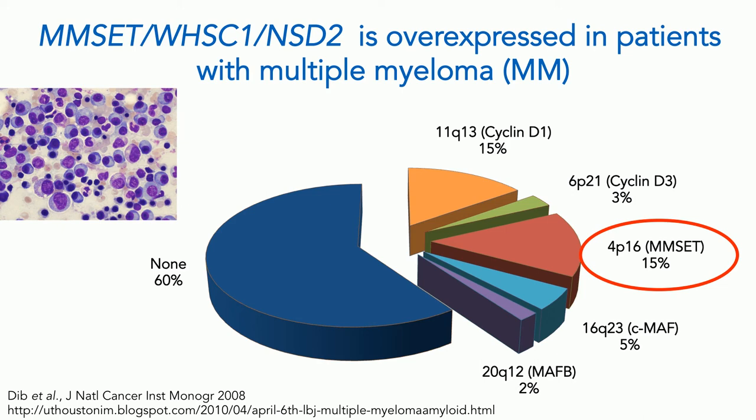This protein has several different names. It was called MM-SET by my colleague Leif Bergsagel, who identified it as a recurrently rearranged protein in about 15 to 20 percent of multiple myeloma cases associated with chromosome 4;14 translocation. He called it multiple myeloma SET domain protein — and SET domain proteins are histone methyltransferases. It was subsequently identified as a candidate gene for Wolf-Hirschhorn syndrome. It's now gotten the more pedestrian name NSD2, to reduce confusion.